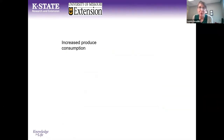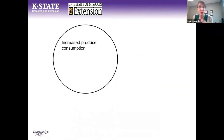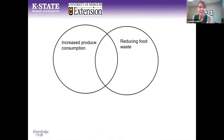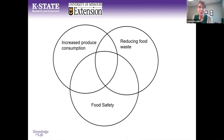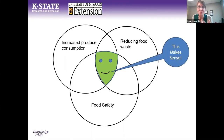There's one more quick graphic before I get into more information. When we think about these three issues — we want to increase produce consumption, reduce food waste, and address food safety — they're all interrelated. What we're going to talk about today is the things in the sweet spot in the center: things we can do that increase produce consumption, reduce food waste, and also help ensure food safety.